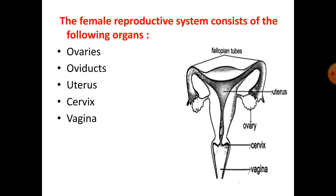Next is the oviduct, which is also called the fallopian tube. Each oviduct has a funnel-shaped opening called the oviductal funnel. You can see in this picture finger-like structures within the fallopian tube portion — these are the cilia, which line the funnel.